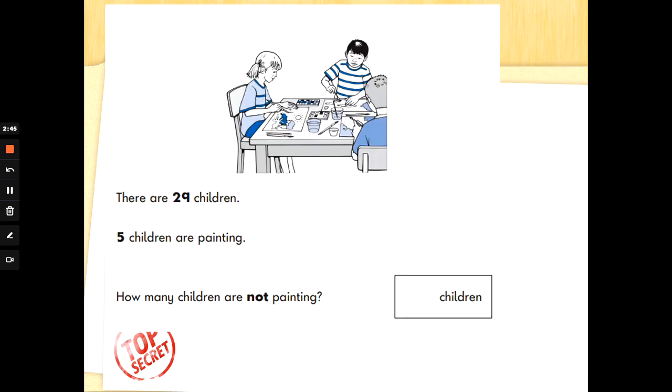There are 29 children in a class. 5 children are painting. How many children are not painting? So if there's 29 children and 5 go away to paint, is that 29 add 5 or 29 take away 5? That's it. 29 take away 5. And if you want to circle the numbers in a number sentence that will help you too. What's 29 take away 5?